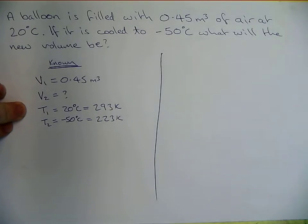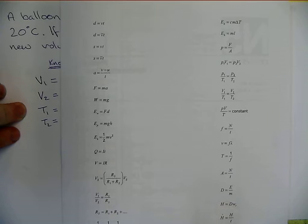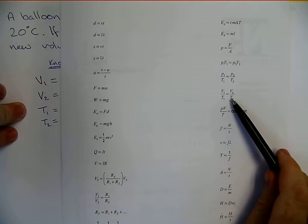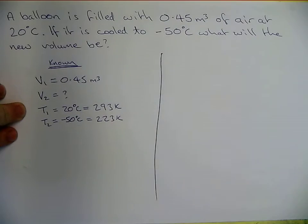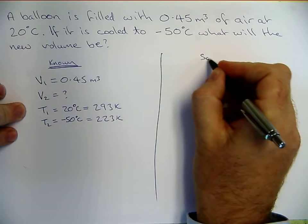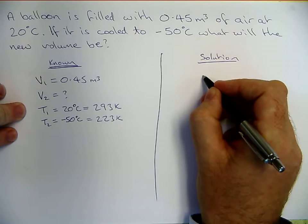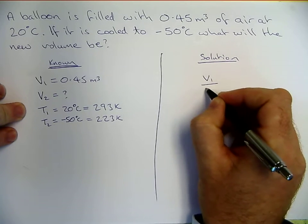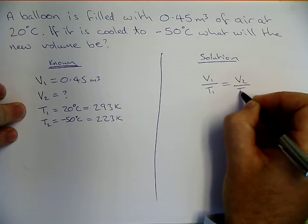So we want our equations to represent these variables. We want volume and temperature only. Volume and temperature, this is the equation we are going to be using here. Volume 1 divided by temperature 1 equals volume 2 divided by temperature 2. So V1 over T1 equals V2 over T2.